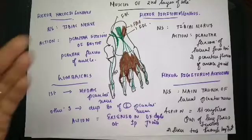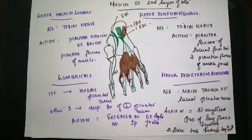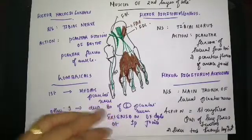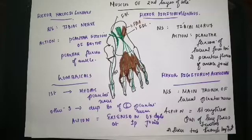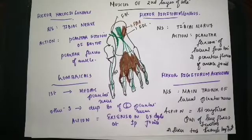These are the muscles of the second layer of the sole — muscles coming from the posterior compartment of the leg and the muscles associated with them. That is all about the muscles of the second layer of the sole. In part 3 of the video we will be discussing the other layers of the zone. Thank you for watching; please subscribe to the channel.